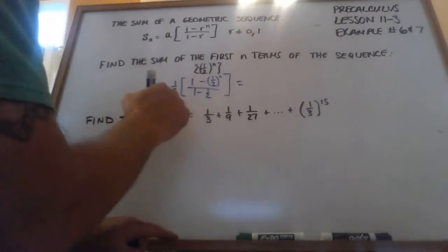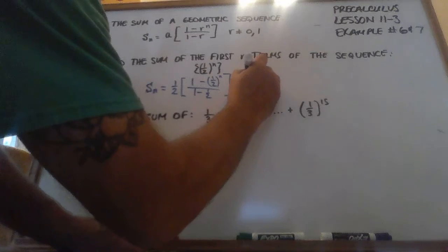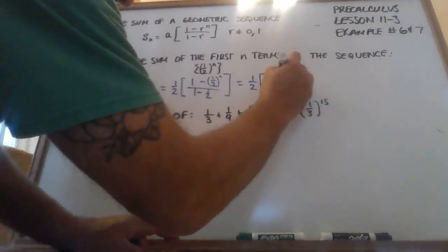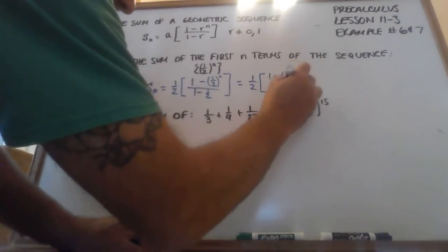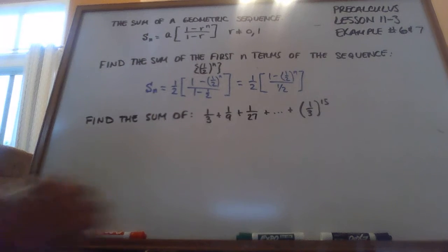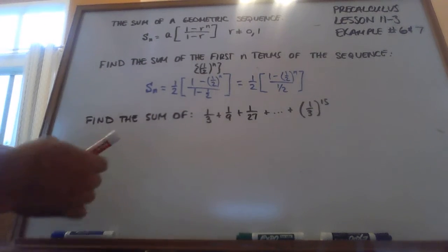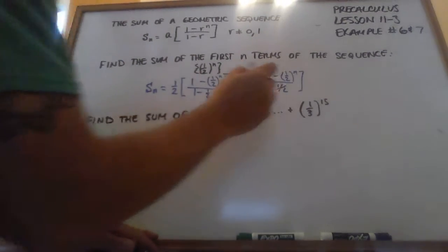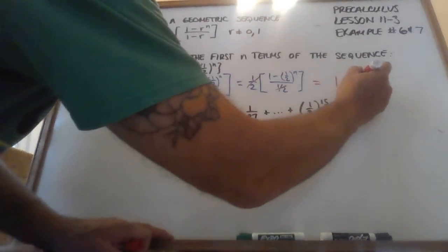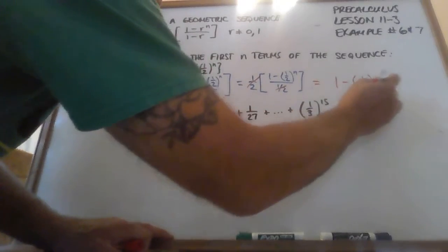Now, if I do a little algebra here, that's 1 half on the bottom. So this is 1 half times 1 minus 1 half to the n power over 1 half. And then this 1 half and that one cancel each other out. So this becomes 1 minus 1 half to the n power.